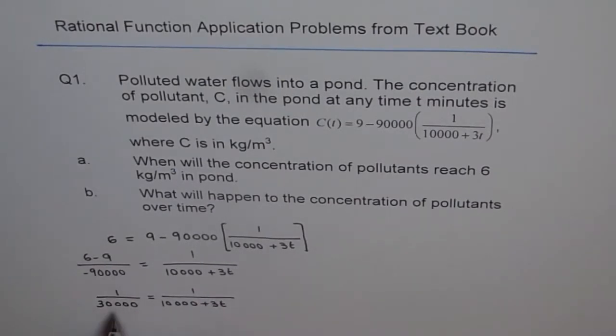Equals to 1 over 10,000 plus 3t. Now let us cross multiply it. So we have 10,000 plus 3t equals to 30,000. So from here we have 3t equals to 30,000 minus 10,000 which is 20,000.